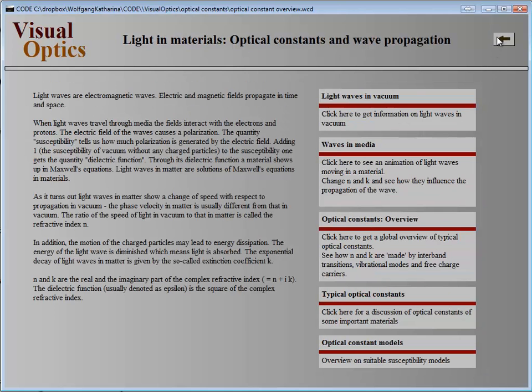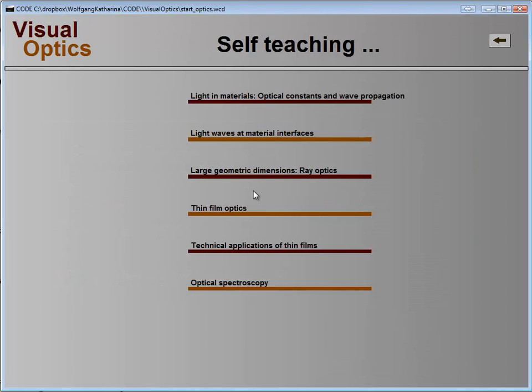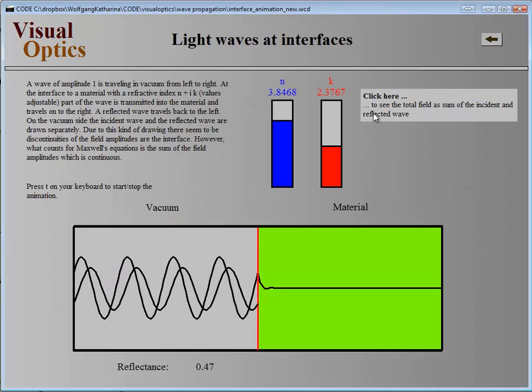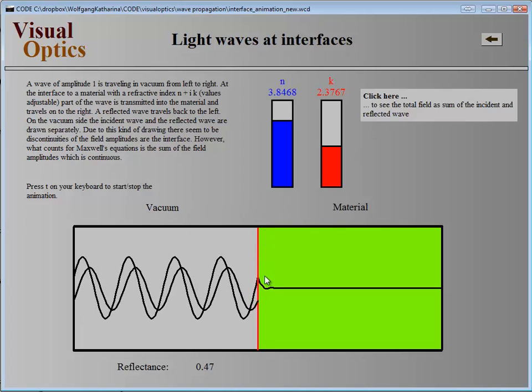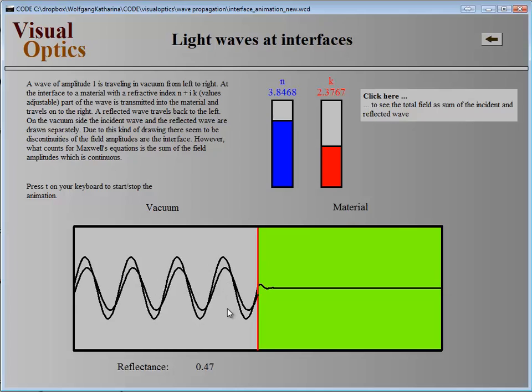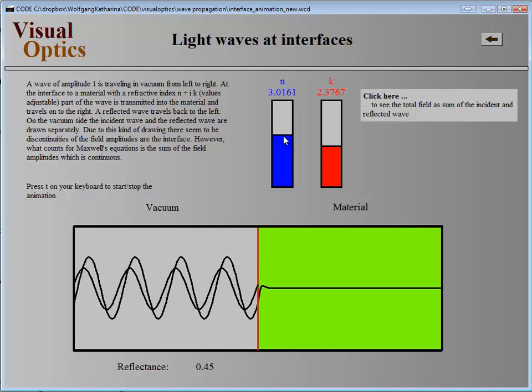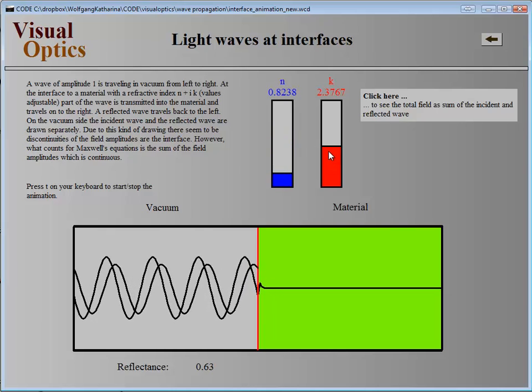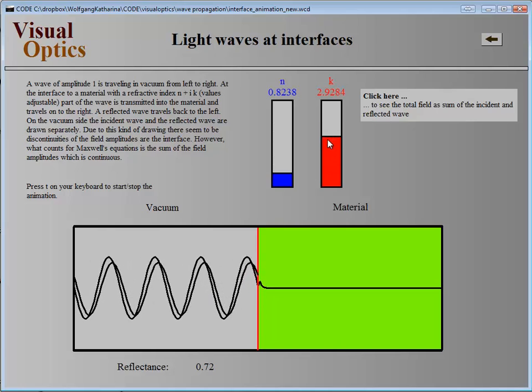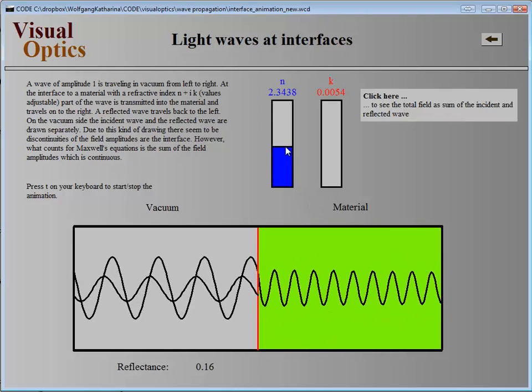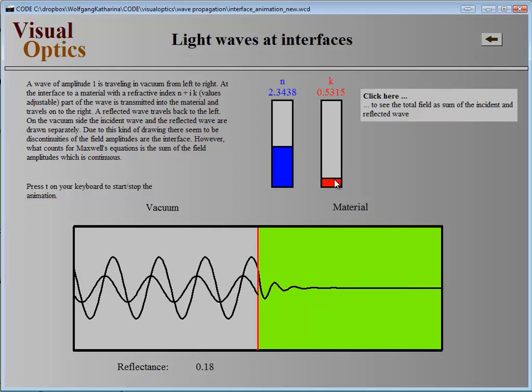This way you're prepared to understand what happens at interfaces when light approaches the connection between two materials. Here you can see what happens in a live picture. You see the incident wave, the interface, and the reflected wave. Instead of a static picture in a book, you get a live picture and can change the refractive index to see what changes to the reflection and transmission. You can instantly try out what happens.